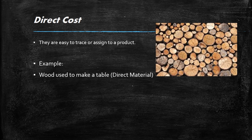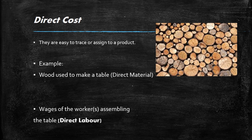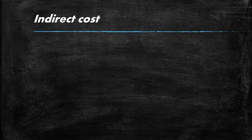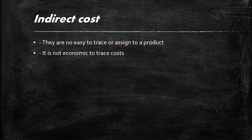The wages of the workers involved in assembling the table also represent direct costs — we classify these as direct labor. Direct labor is another key type of manufacturing cost.